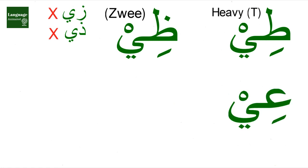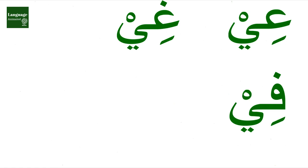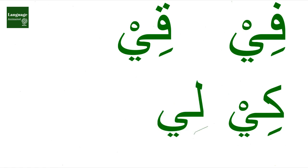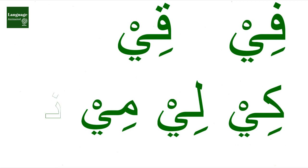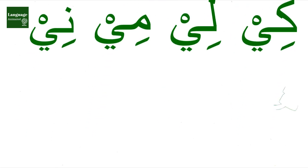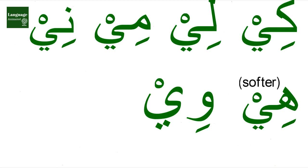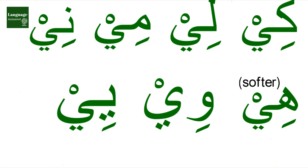Fee, Fee. Kee, Kee, Kee, Kee. Lee, Lee. Me, Me. Knee, Knee. He, He. It's softer — He. We, We. Ye, Ye. That's how the long vowel ya al-mad is used with different letters in the Arabic language.